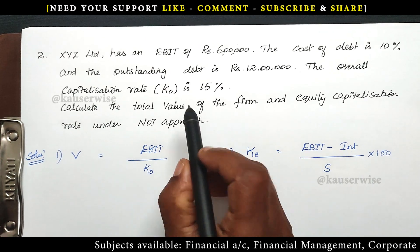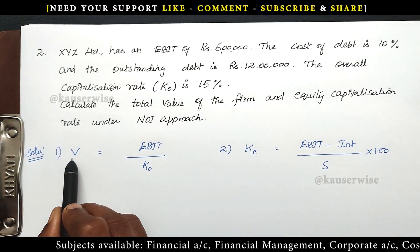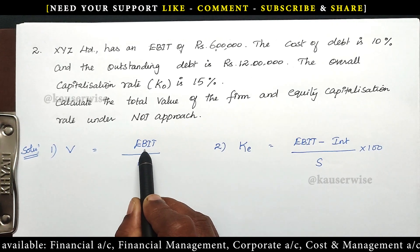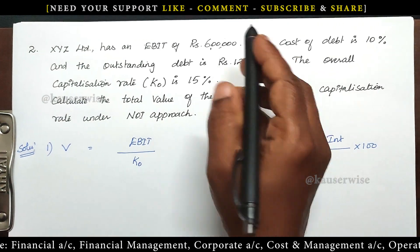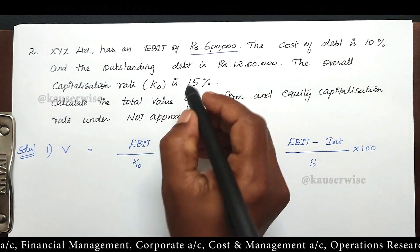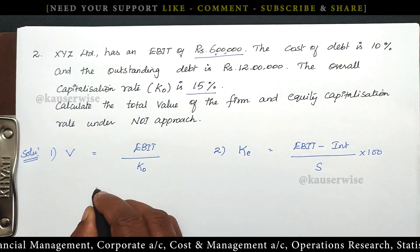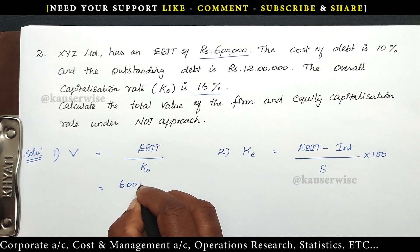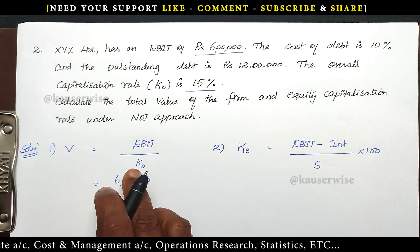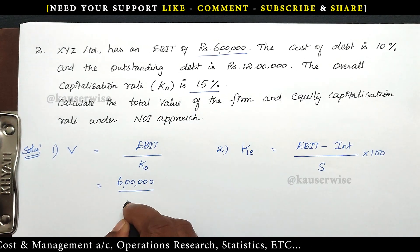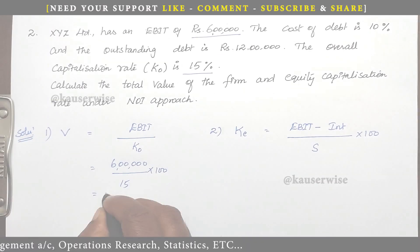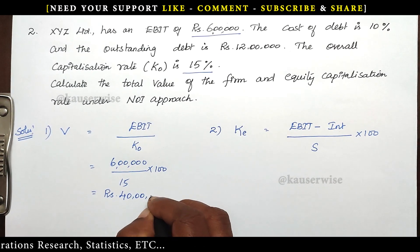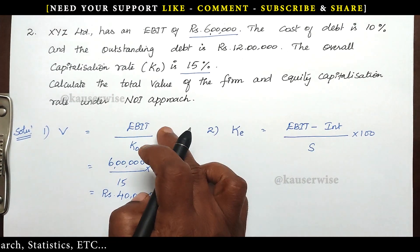To find the value of the firm V, the formula is V = EBIT divided by K-O. EBIT is 6 lakhs and K-O is 15%. Simply applying the formula: 6 lakhs divided by 15% equals 40 lakhs. So the value of the firm is Rs. 40 lakhs.